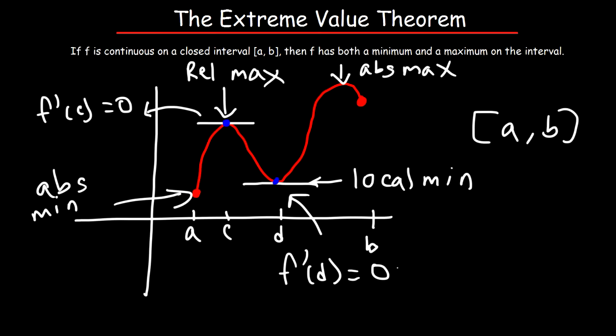Anytime you have the first derivative function equal to zero, those points are known as critical numbers. So c and d are critical numbers of the function. Anytime f prime of c is equal to zero, or even if it doesn't exist, you have a critical number at that point.